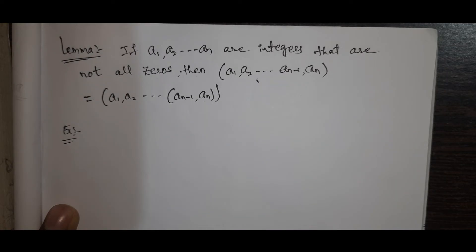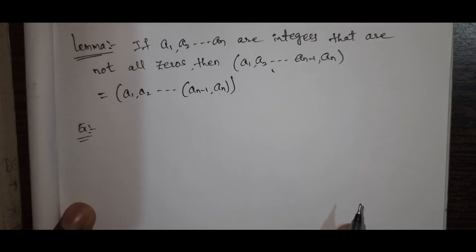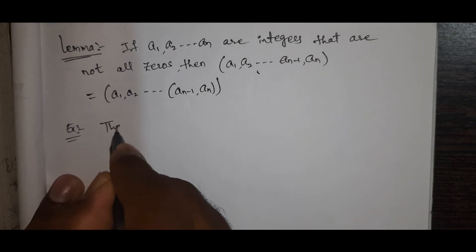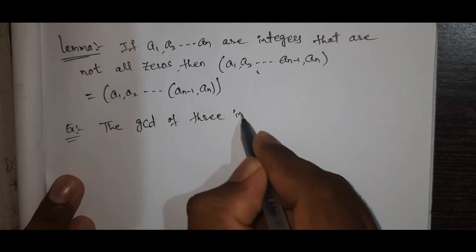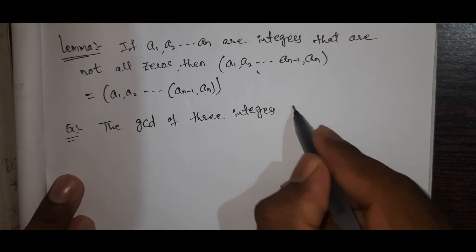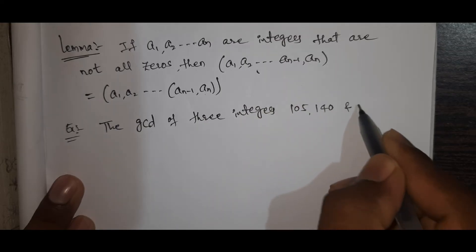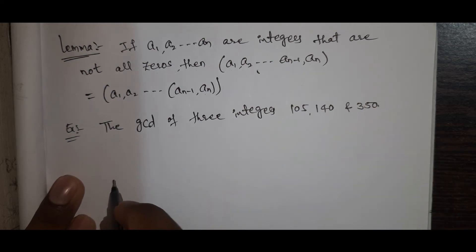So first we will find GCD of n numbers one step at a time. One example to make this clear: the GCD of three integers — 105, 140, and 350.